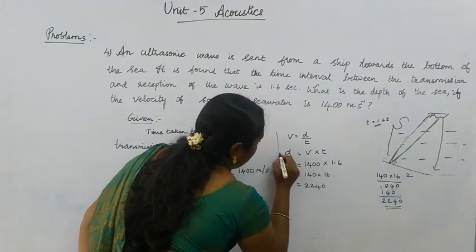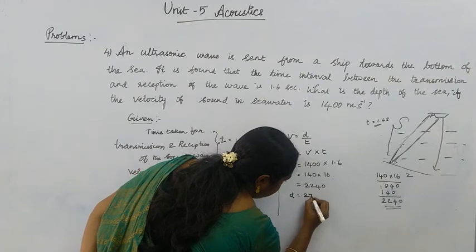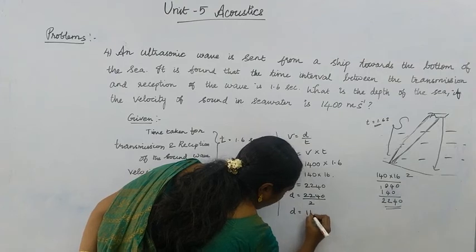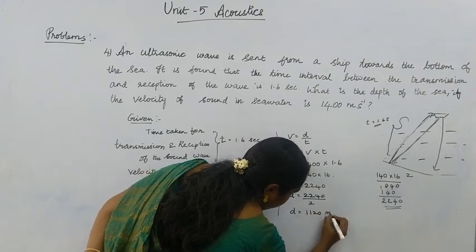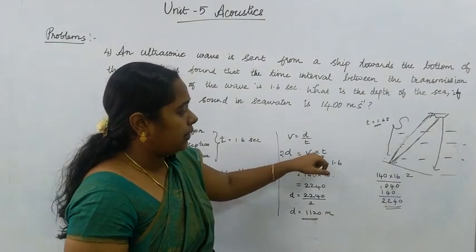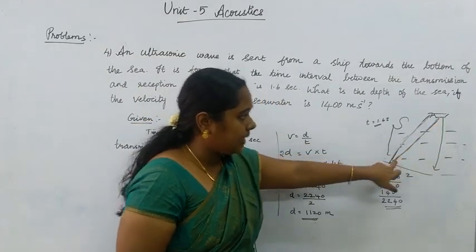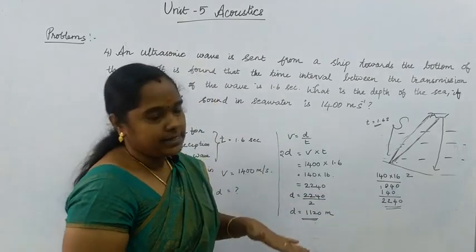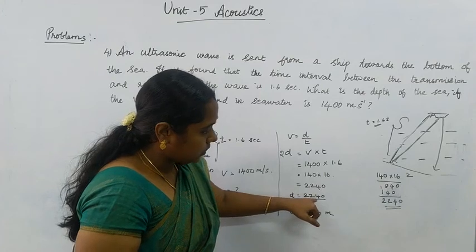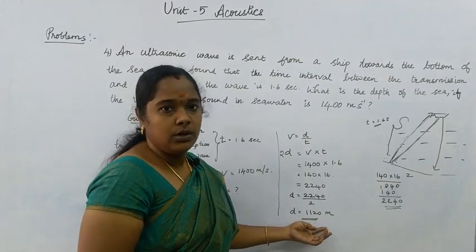So, 2D is equal to V into T, which gives 2240. Therefore D is equal to 2240 divided by 2, so D is equal to 1120 meters. Why do we write 2D? Because the total distance travelled by the signal is twice the depth. What we want exactly is only the depth, so D equals 2240 divided by 2, giving the answer D equals 1120 meters.